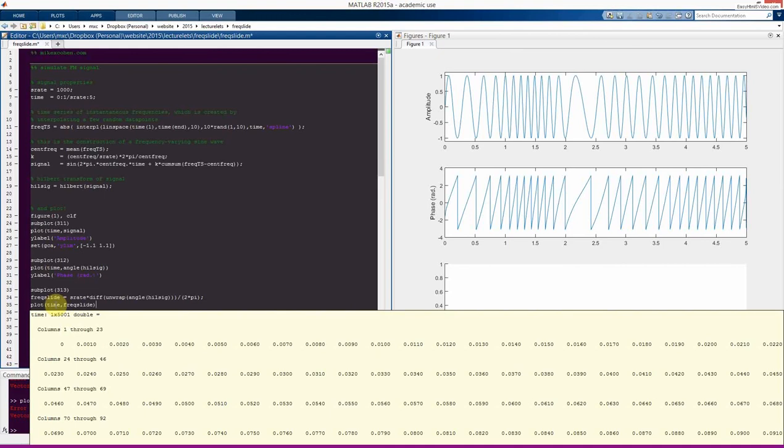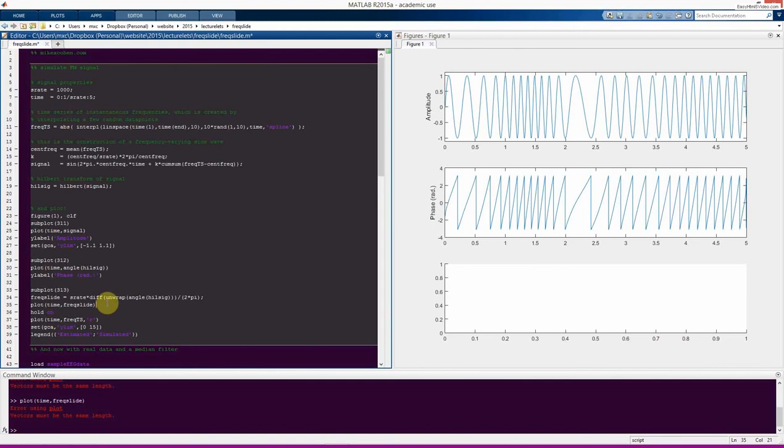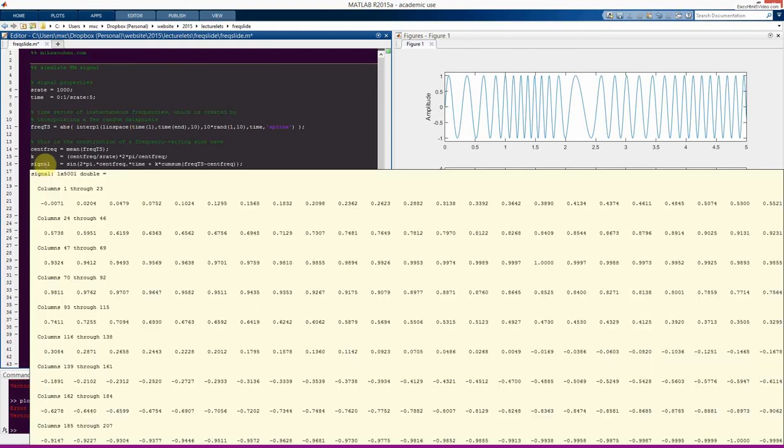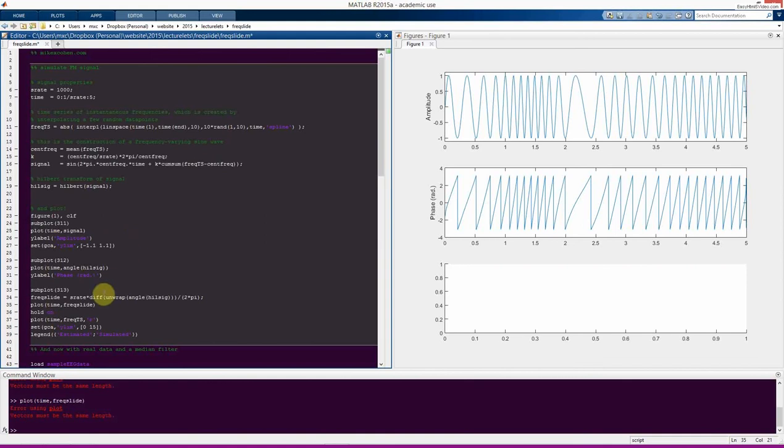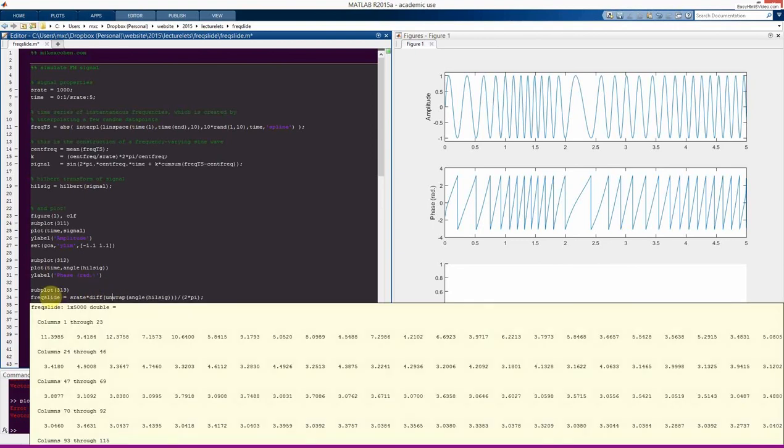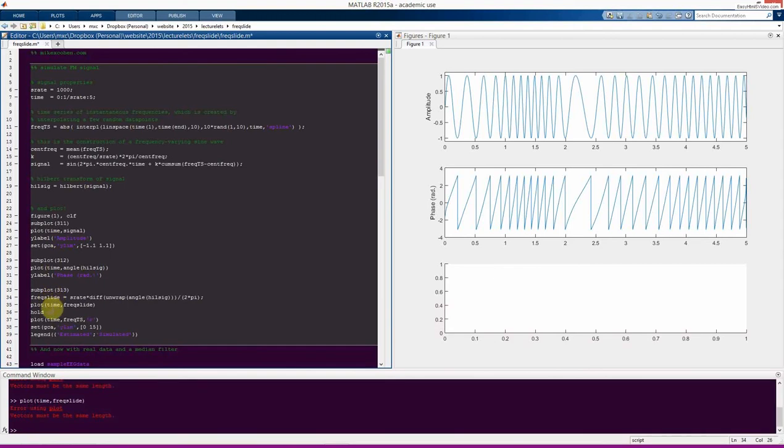So this might seem wrong at first because if you look at the signal itself it is five thousand and one time points. But actually then you have to remember that we are using the diff function, the difference function which computes the first order derivative. And so this means that the output of this function is going to be the difference between each element and the previous element. So that actually means we're going to have one element less in this resulting time series compared to the original time series. So this is easy to fix. Then we just plot time one to n minus one.